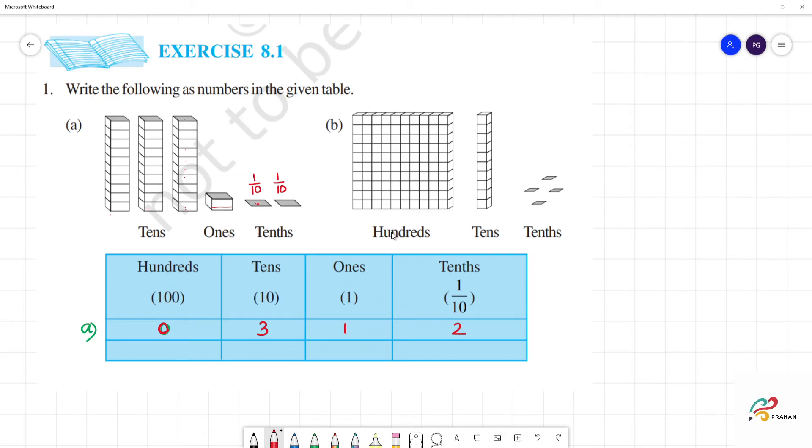Next, b1. Hundreds, hundreds one irukku. Tens, how many are there? Tens, here's one, two, three, four. Four irukku.